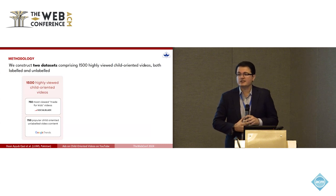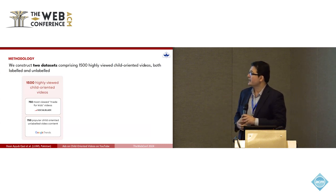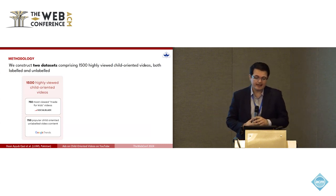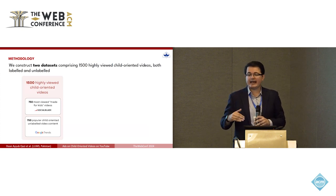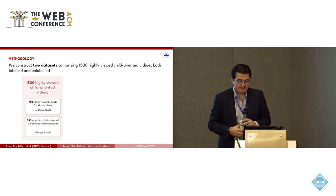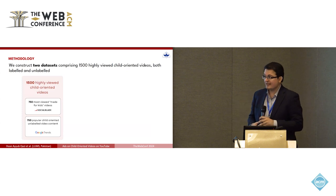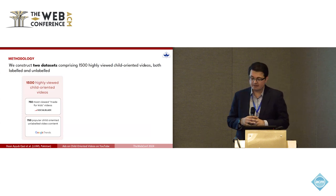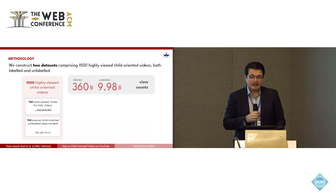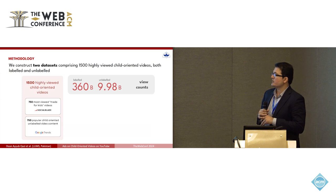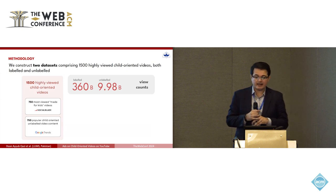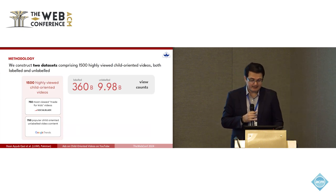To answer these questions, we constructed two datasets of 1,500 highly viewed child-oriented videos, both labeled and unlabeled — 750 most-viewed made-for-kids videos and 750 popular unlabeled child-oriented videos. Taken together, the labeled videos had nearly 360 billion views, whereas the unlabeled videos had 9.98 billion views.